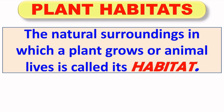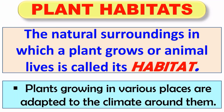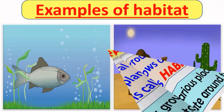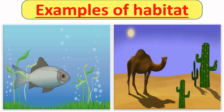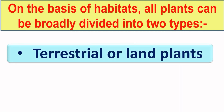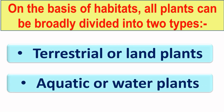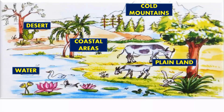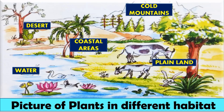Let's study about the plants' habitats. The natural surrounding in which a plant grows or an animal lives is called its habitat. Plants growing in various places are adapted to the climate around them. For example, the habitat of a fish is water, and the habitat of a cactus is desert. On the basis of habitats, all plants can broadly be divided into two types: terrestrial or land plants, and aquatic or water plants. Plants can be found in different habitats like desert, coastal areas, and in water.